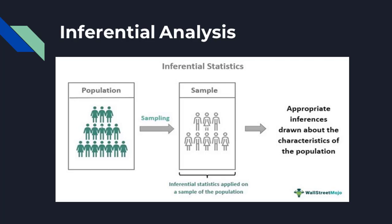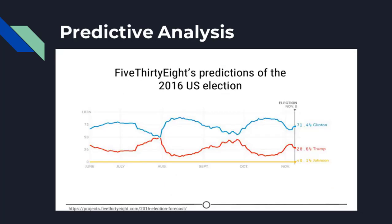We shouldn't use census data in inferential analysis — a census already collects information on functionally the entire population, leaving nobody to infer to. A better example of inferential analysis is a study in which a subset of the US population was assessed for life expectancy given the level of air pollution they experienced. This study uses data collected from a sample of the US population to infer how air pollution might be impacting life expectancy across the entire US.